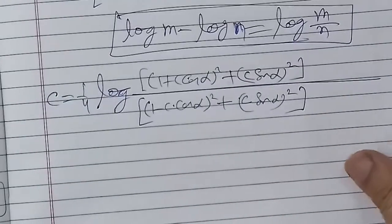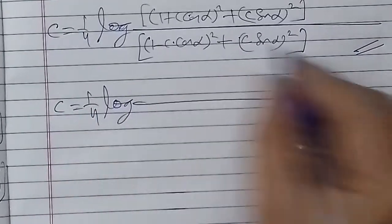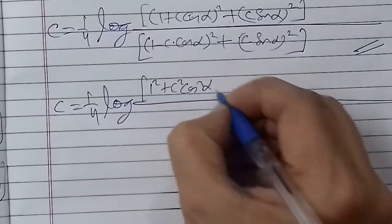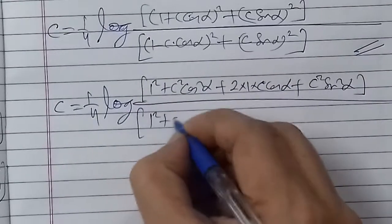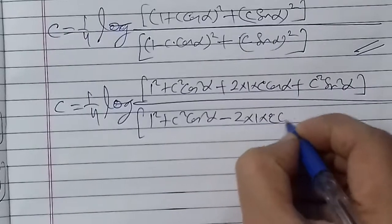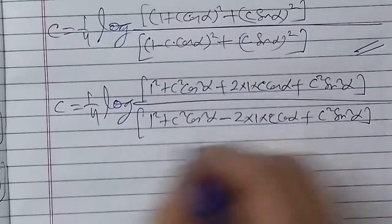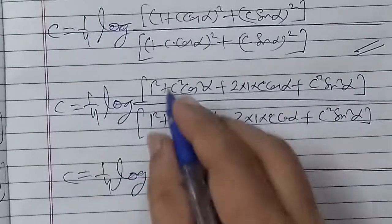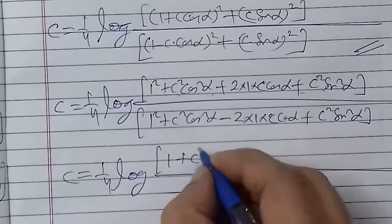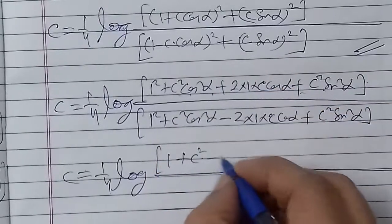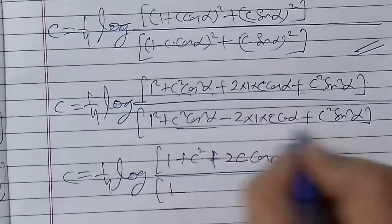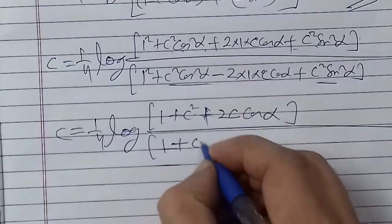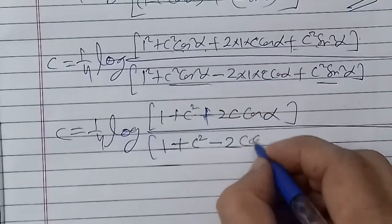Expanding the squares: numerator = 1 + C² cos² α + 2C cos α + C² sin² α = 1 + C² (cos² α + sin² α) + 2C cos α = 1 + C² + 2C cos α. Denominator = 1 + C² cos² α − 2C cos α + C² sin² α = 1 + C² − 2C cos α. So the final answer is C = (1/4) log[(1 + C² + 2C cos α)/(1 + C² − 2C cos α)].